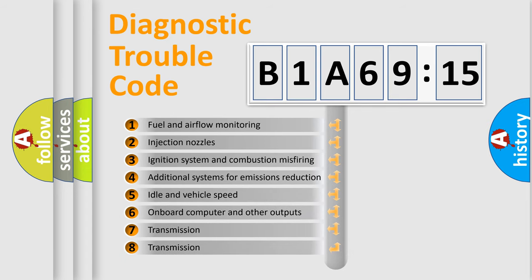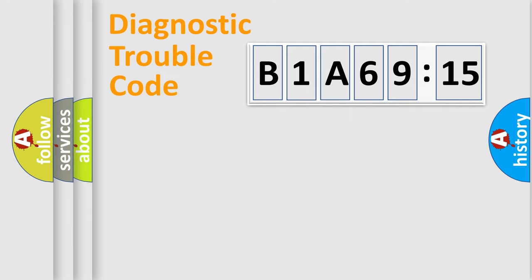The third character specifies a subset of errors. The distribution shown is valid only for the standardized DTC code. Only the last two characters define the specific fault of the group.